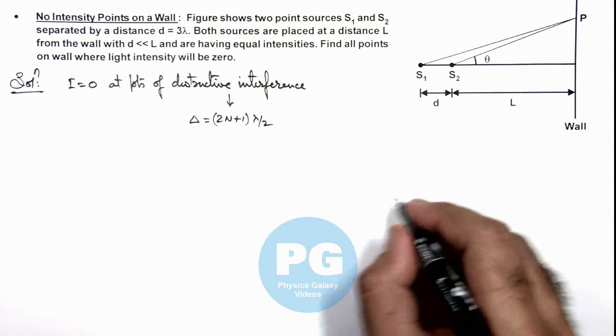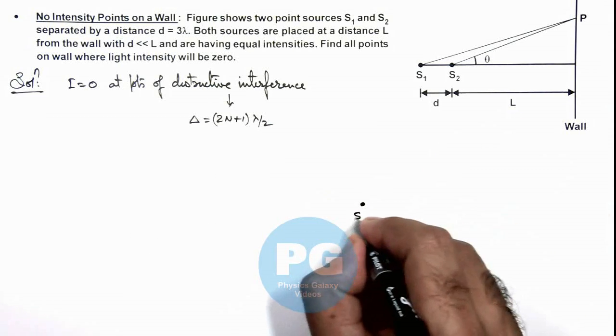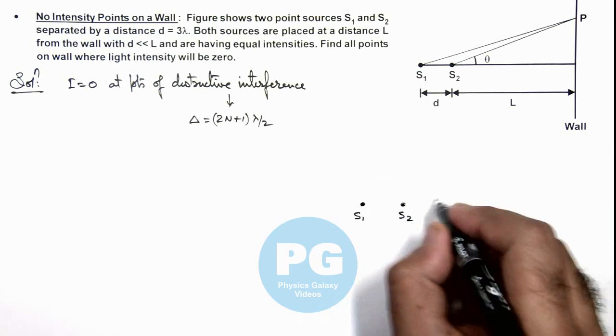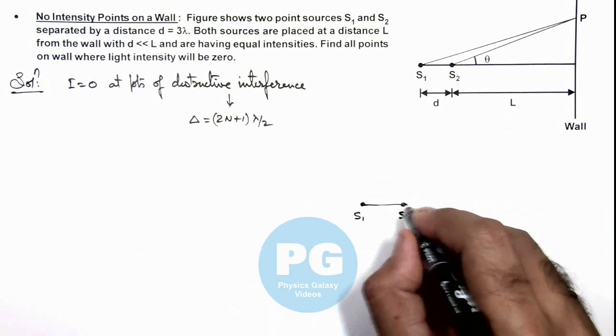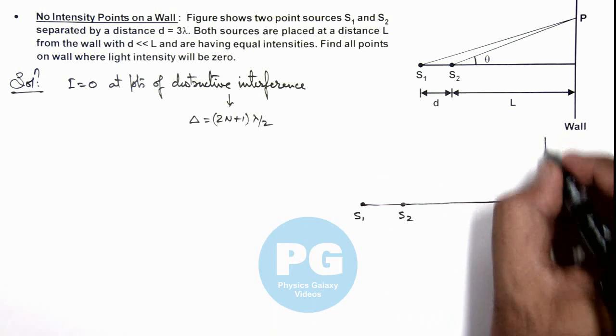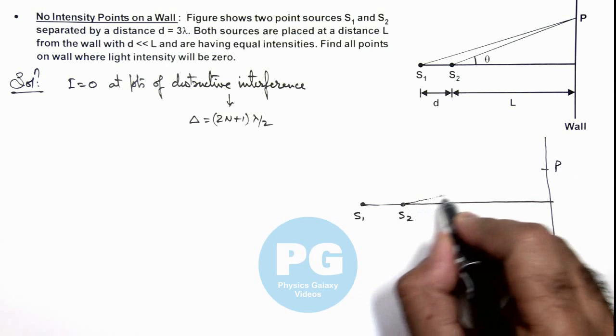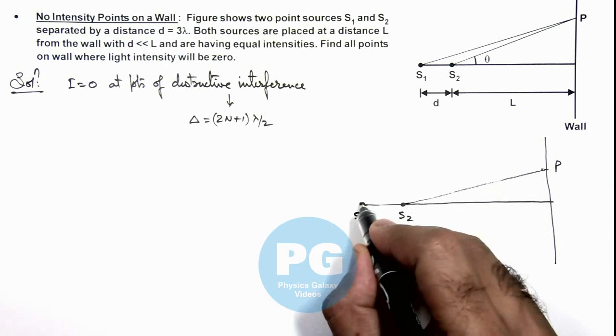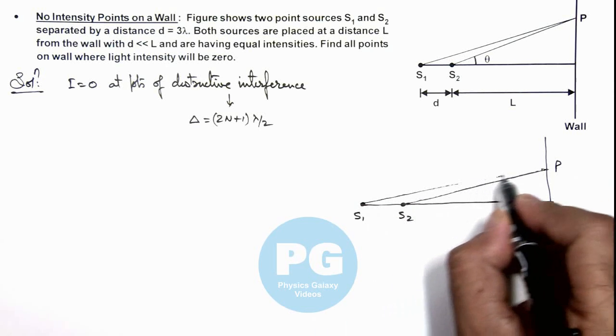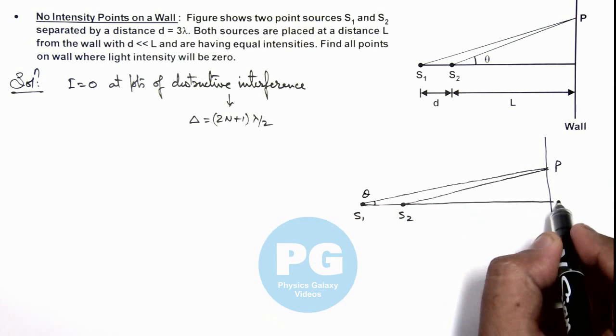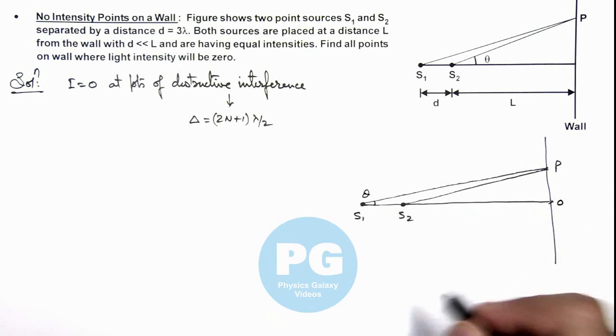If we analyze it again, these are the two sources S₁ and S₂. From these sources if we consider a point P on wall, which is located at an angular position theta from point O, the center of this screen.